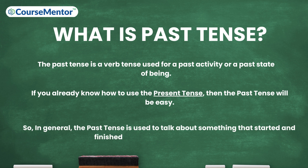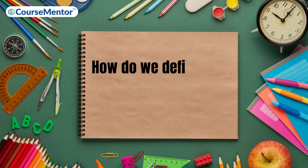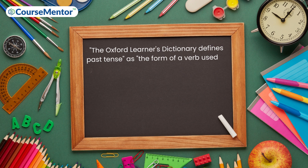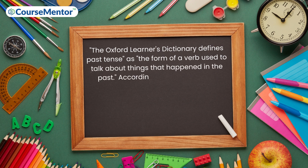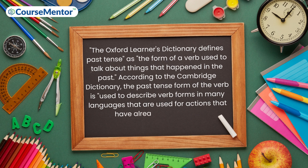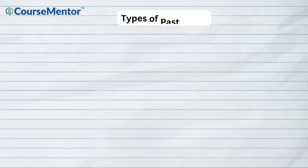In general, the past tense is used to talk about something that started and finished at a definite time in the past. The Oxford Learners Dictionary defines past tense as the form of a verb used to talk about things that happened in the past. According to the Cambridge Dictionary, the past tense form of the verb is used to describe verb forms in many languages that are used for actions that have already happened.